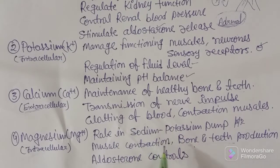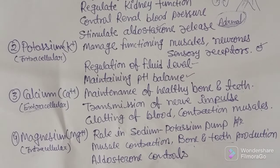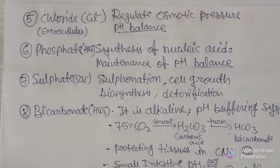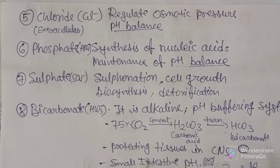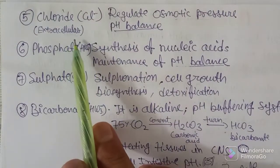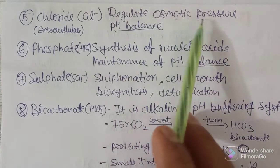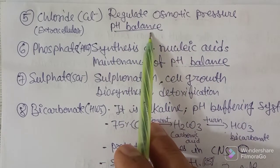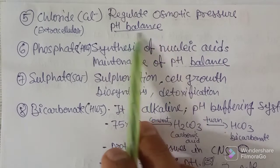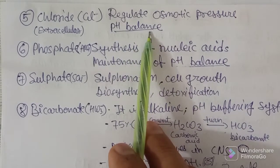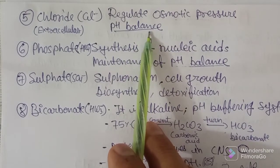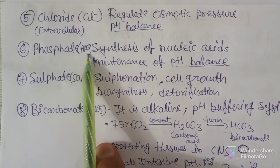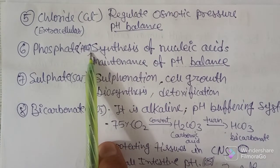Most cationic electrolytes share similar functions: balancing body fluid, maintaining pH, and strengthening muscles and nerves. Moving to the anionic types — chloride (Cl-) is an extracellular electrolyte that regulates osmotic pressure and pH balance. pH balance is a very important function performed by these electrolytes.